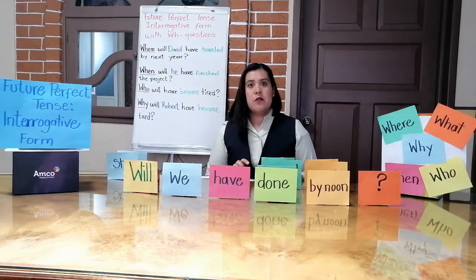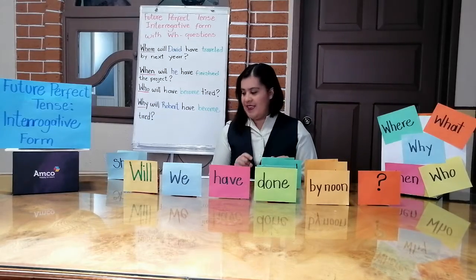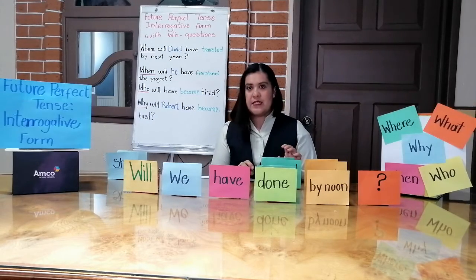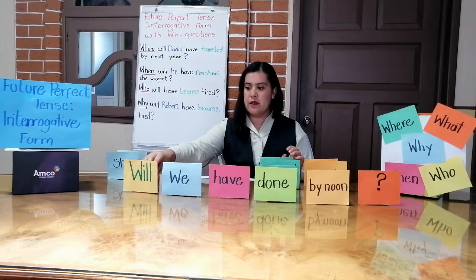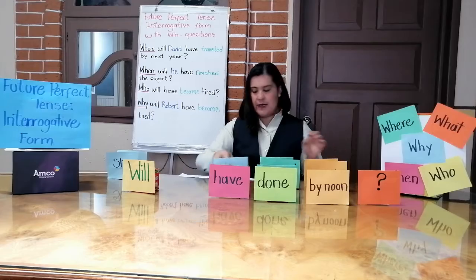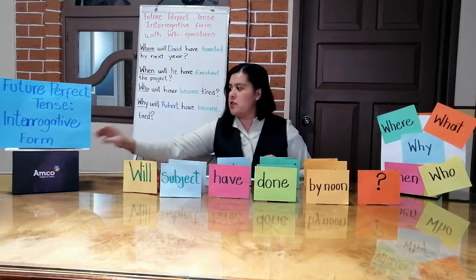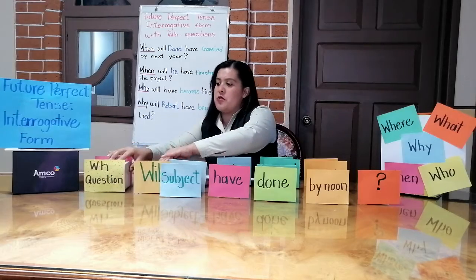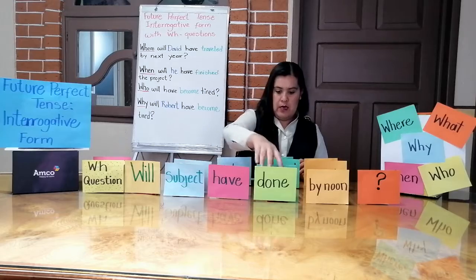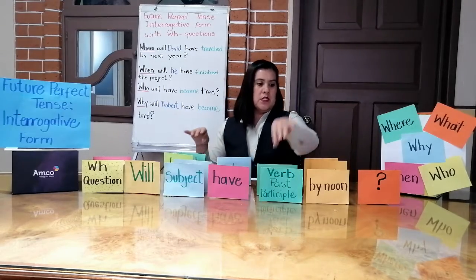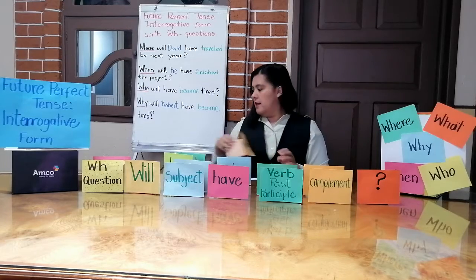So, to ask a WH question in the Future Perfect Tense, we use the following structure: WH question, plus will, plus subject, plus have, plus verb in past participle, plus complement, and the question mark.